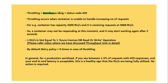Throttling means not responding, and we get status code 429 in the response. Throttling occurs when a container is unable to handle an increasing number of DB requests. For example, a container has a capacity of 2000 RUs per second but is receiving requests at 3000 RUs per second — in that case throttling will occur. It's possible that a container may not be responding at that moment and may start working again in 2 seconds.